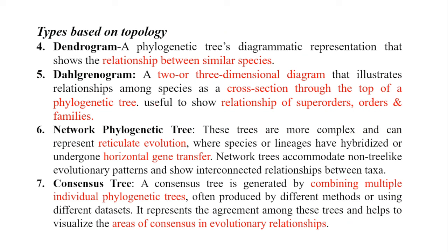A network phylogenetic tree is applicable for species like bacteria, where due to horizontal gene transfer they acquire resistance genes. That evolutionary pattern of primitive organisms is applicable where a vast number of species is available, so we can compare using a network phylogenetic tree.